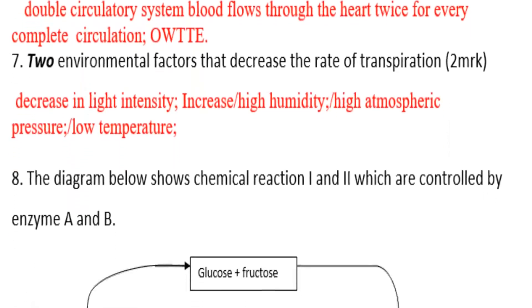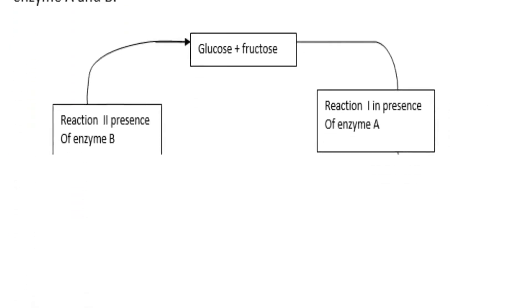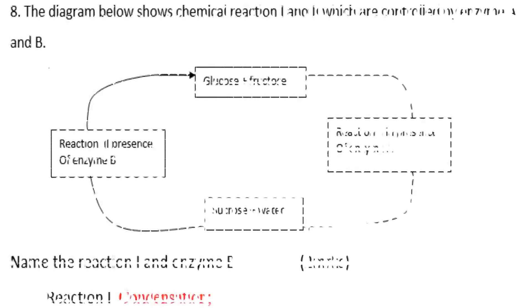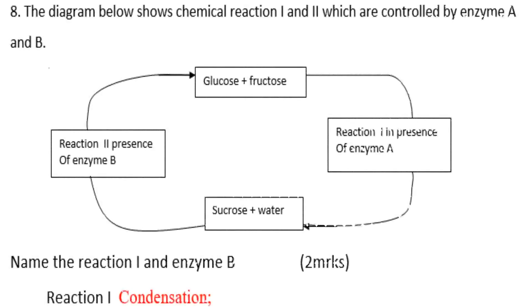The diagram below shows a chemical reaction. Reaction one and two are controlled by enzyme A and enzyme B.